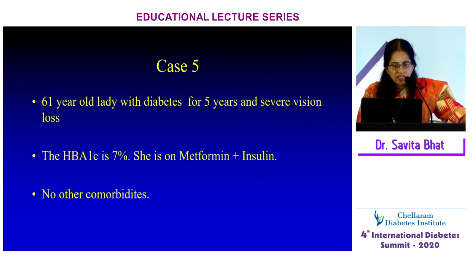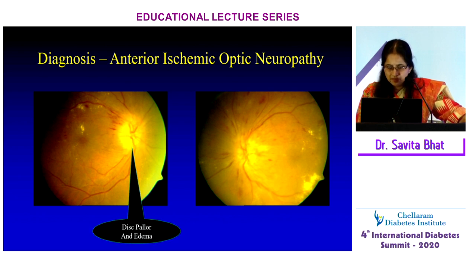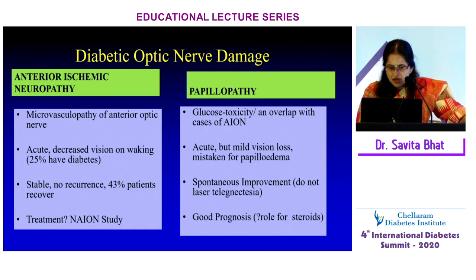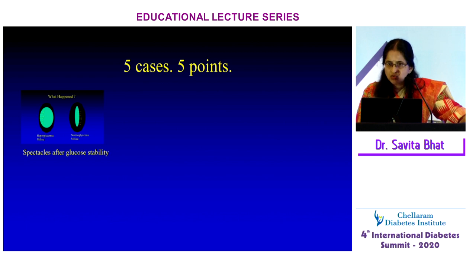Case five: A lady with diabetes for five years and severe vision loss, HbA1c of 7%, on metformin and insulin with no other comorbidities. Her fundus picture was a case of anterior ischemic optic neuropathy, which should not be confused with papilledema. There is also an entity called diabetic papillopathy where vision loss is not significant — these findings must be kept in mind.